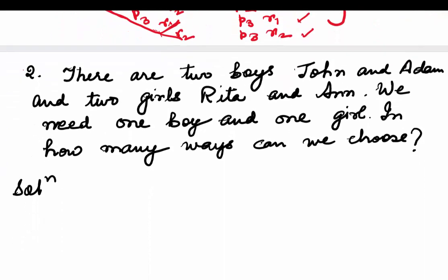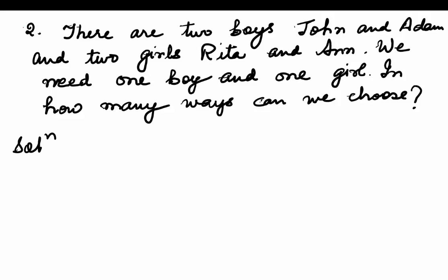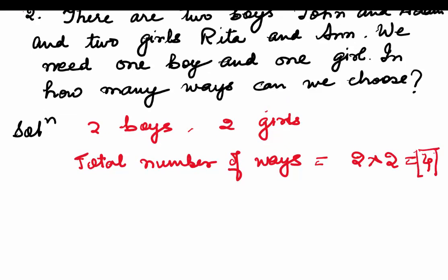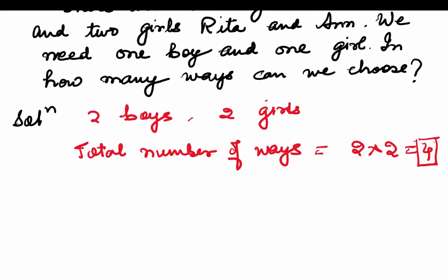Let's look at another example. There are two boys, John and Adam, and two girls, Rita and Anne. We need one boy and one girl — in how many ways can we choose? You have two boys and two girls, so we can pick a boy in two ways and a girl in two ways. Total number of ways is 2 × 2 = 4.